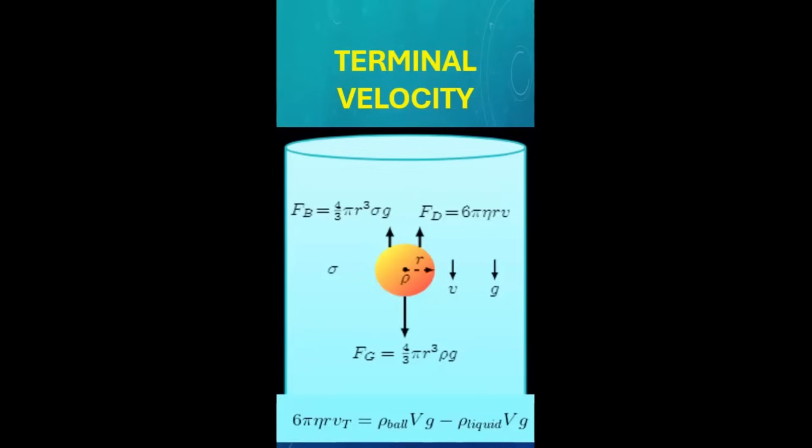Terminal velocity is the constant speed an object reaches when the upward force of buoyancy and drag equals the downward force of gravity, and the net force becomes zero. In other words, it's the point at which the object stops accelerating and falls at a steady rate. In fluid environments, like skydiving or falling through water, terminal velocity occurs when the drag force matches the gravitational force, resulting in a balanced equilibrium.